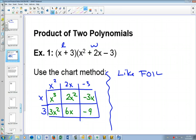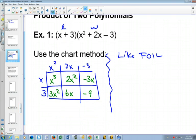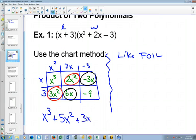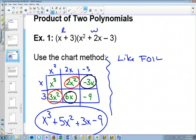Then you just put them all together. Do we have any like terms? Yes, we do. 2x squared and 3x squared are like terms. And the 6x and the minus 3x are like terms. So our final answer will be x cubed plus 5x squared, 6x minus 3 will be plus 3x minus 9. That's the chart method. It's based on an idea of area.